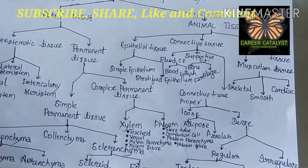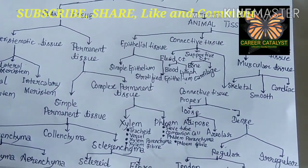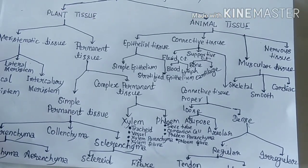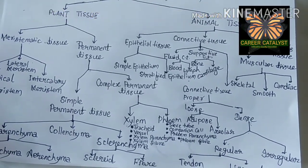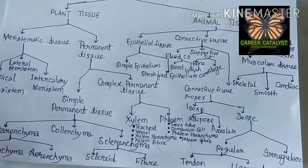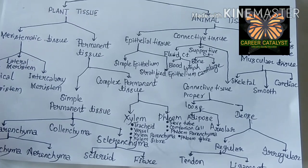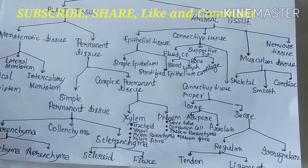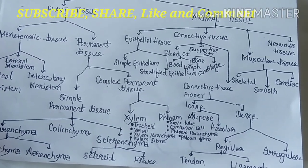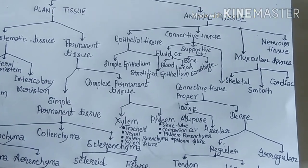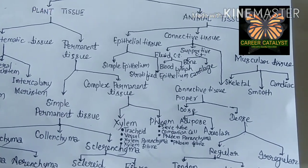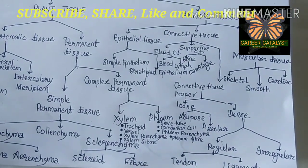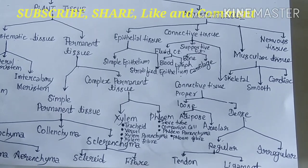We will read about all of these later. Fluid connective tissue also includes lymph. Supportive connective tissue, as its name suggests, provides support. It is of two types: bone and cartilage. We have 206 bones in our body. The difference between bone and cartilage is that bones are harder and cartilages are softer; bones are non-flexible whereas cartilages are flexible and elastic.